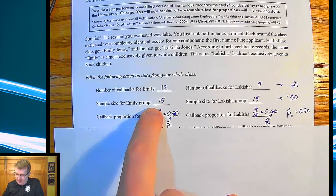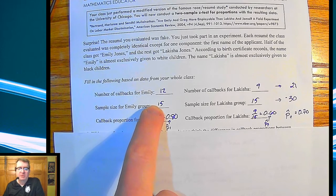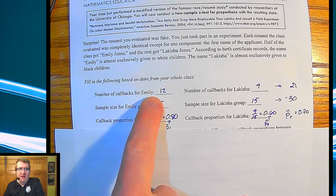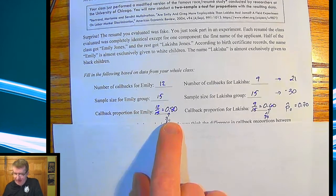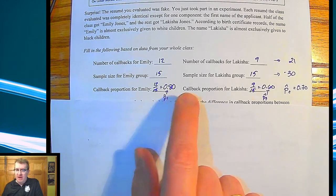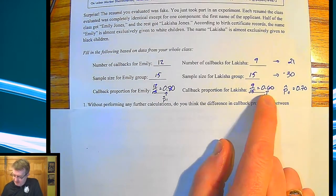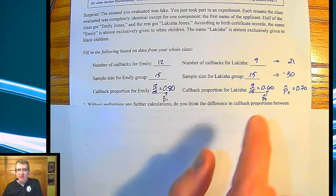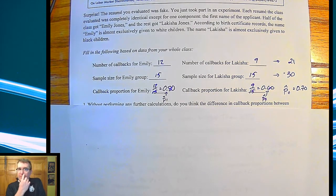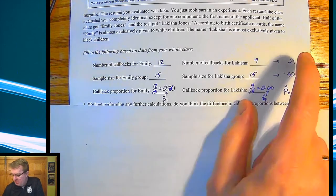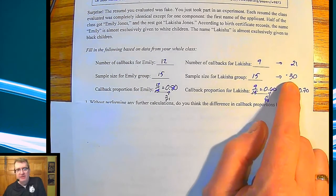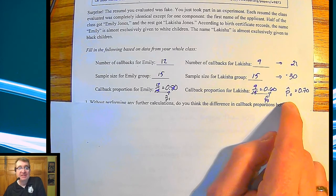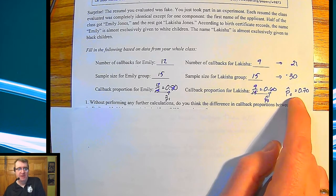So we are going to assume, using their data, that out of the 15 people who saw Emily's resume, 12 of them said, yeah, call her back. So that's an 80% difference. And then out of the people who got Lakeisha, 9 out of 15 did. That's a 60% difference. Now, there is something here called a combined proportion. And that's kind of like, okay, if everything was the same, what would happen? So we've got 21 callbacks out of 30 people. So that turned out to be a 70% rate. And we're going to come back and use this here later.